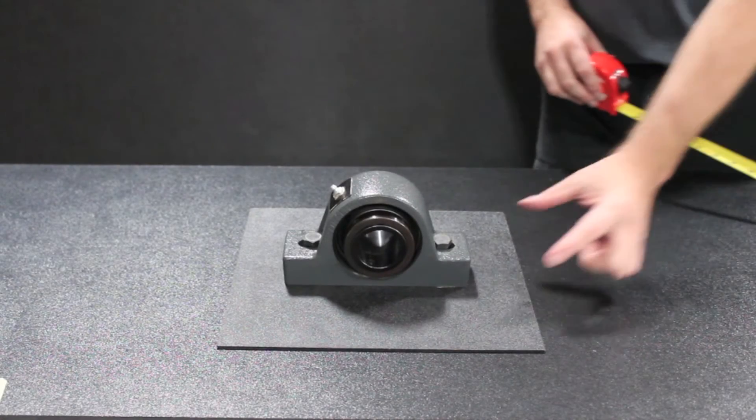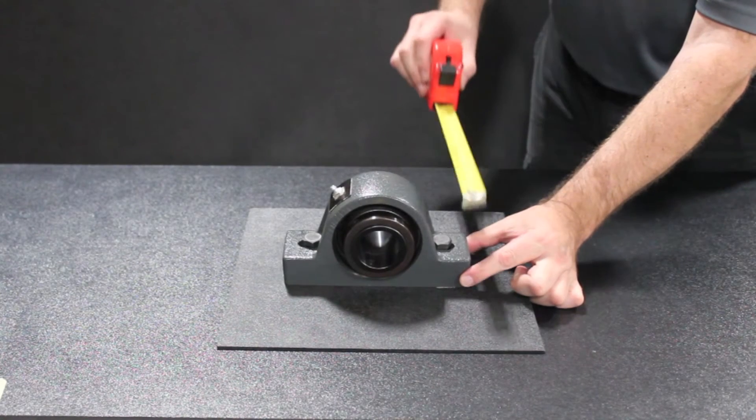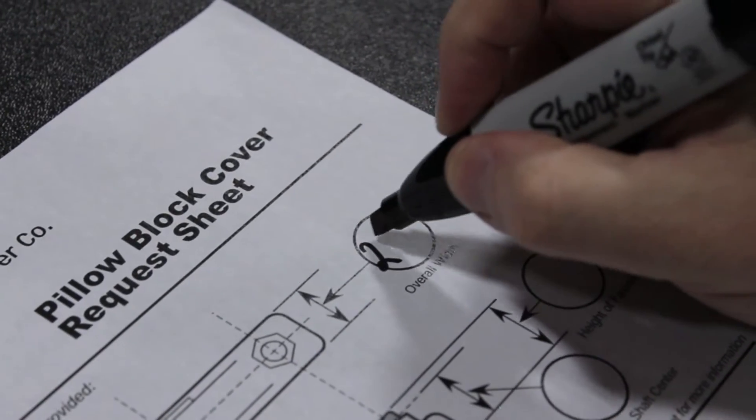The first measurement you will need to find is the overall width of your bearing. This is found by locating the widest points of your bearing's housing and measuring the distance between them.